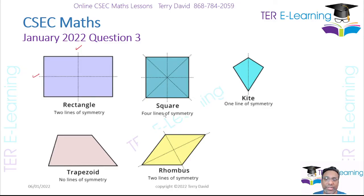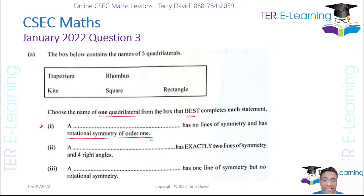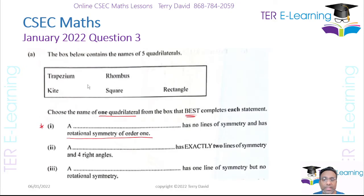Rotational symmetry has to do with when you rotate a plane shape, how many times it lines up with itself. Rotational symmetry of order one means the only way to get the shape to line up is to make a full 360-degree rotation. We want no lines of symmetry — the only quadrilateral with no line of symmetry is the trapezium, so the answer here is trapezium.